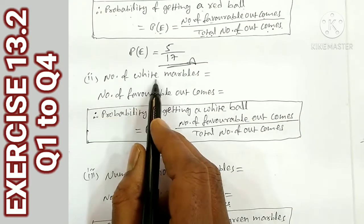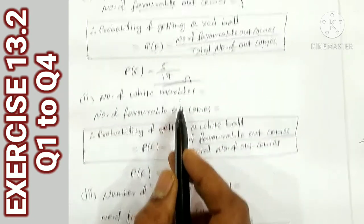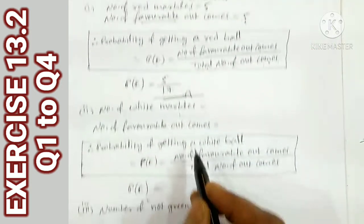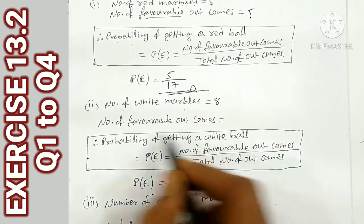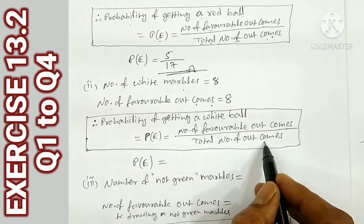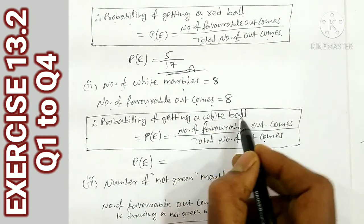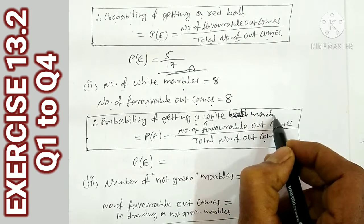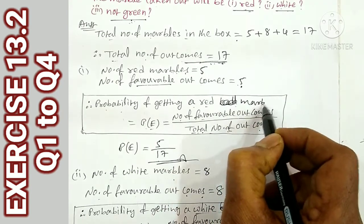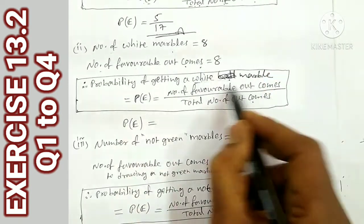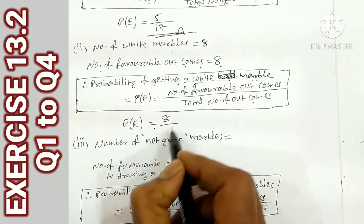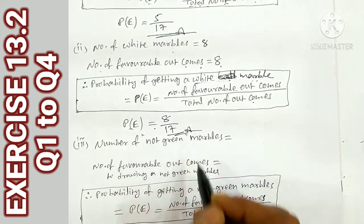Now, the number of white marbles is 8. The total number is 17. The number of favorable outcomes is 8. Using the same formula: P(white) = favorable outcome 8 / total outcome 17. So 8/17 is the answer.